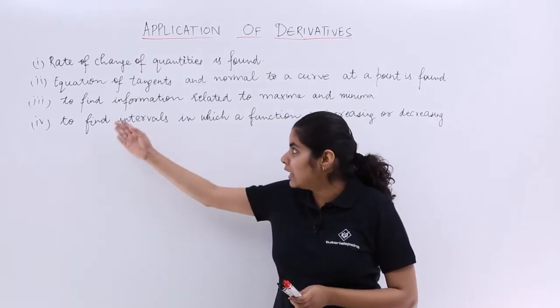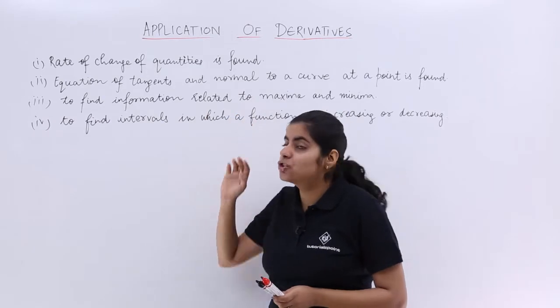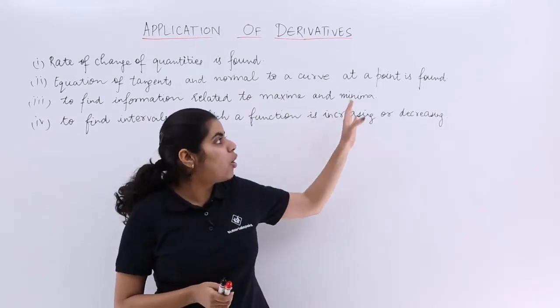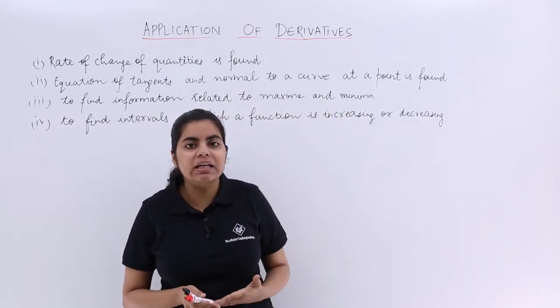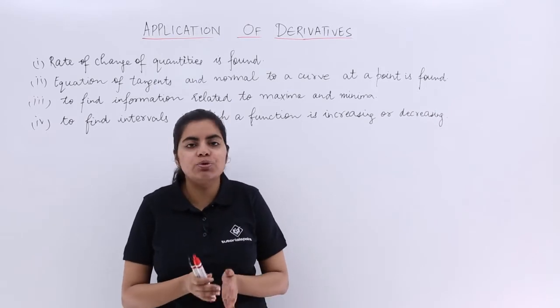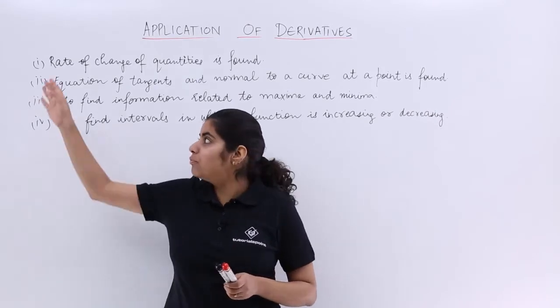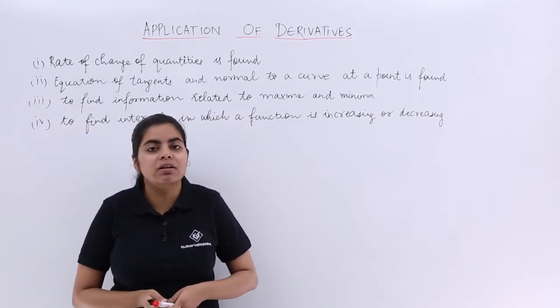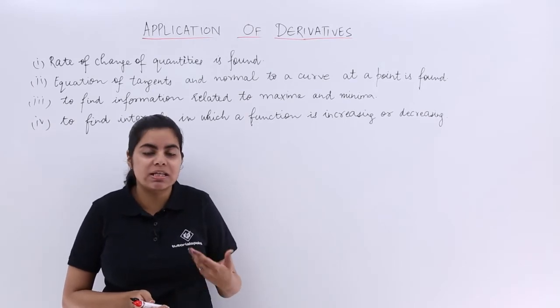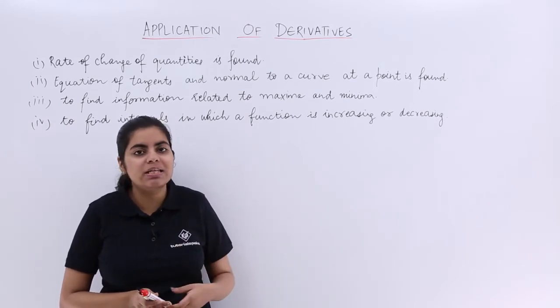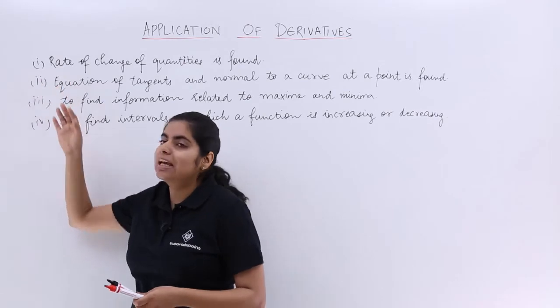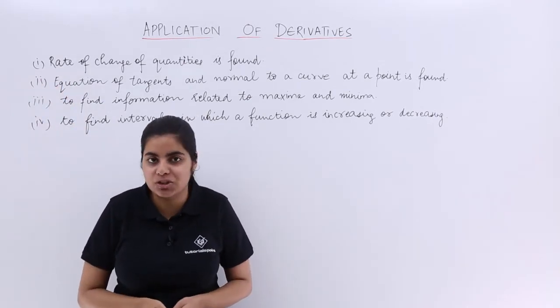The third application is to find information related to the maxima or the minima. Again we'll be studying about this maxima minima, so you don't need to worry. All four points will be easily covered in the chapter gradually. As soon as we start with the videos you'll be seeing that we'll be covering the first and the second and later on the third and the fourth application too.